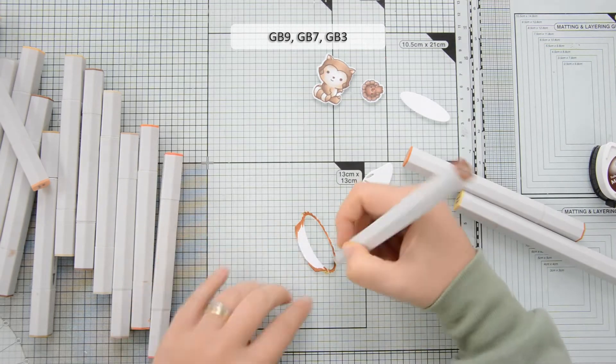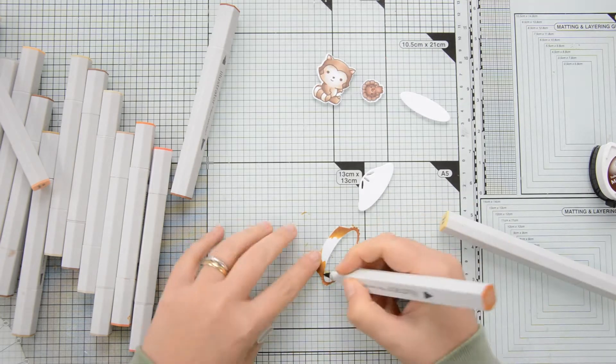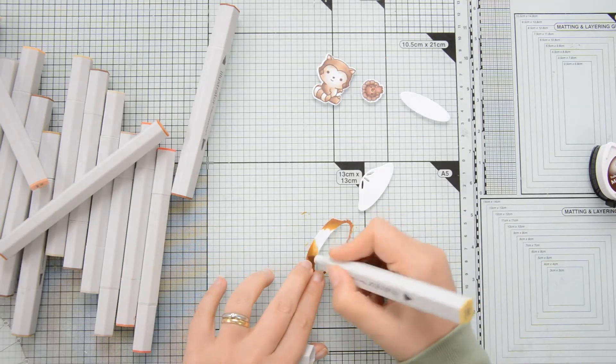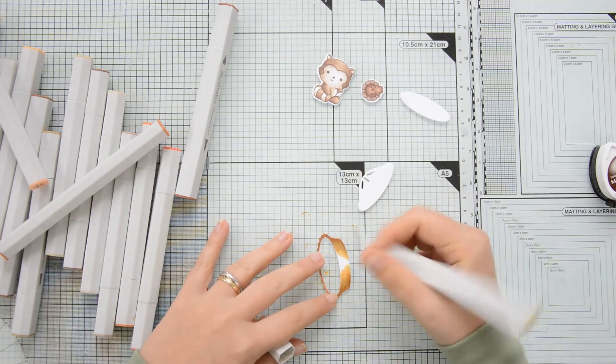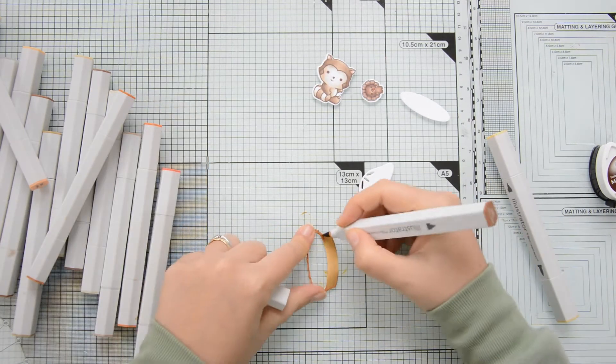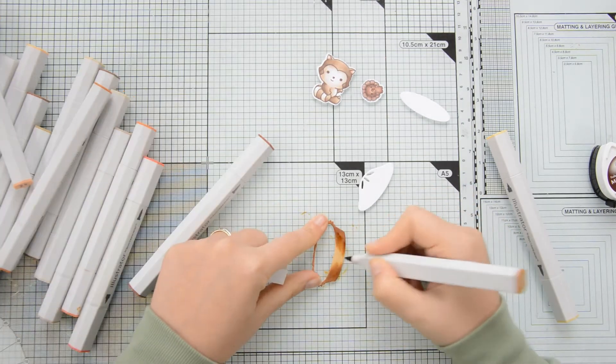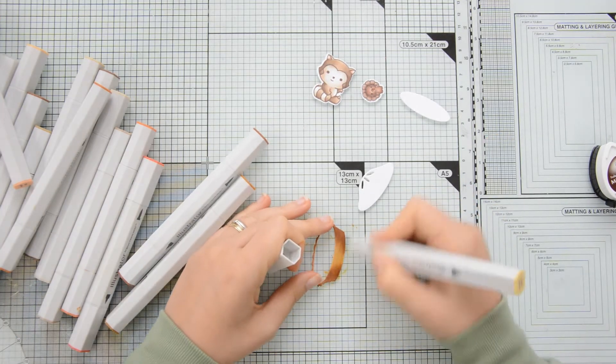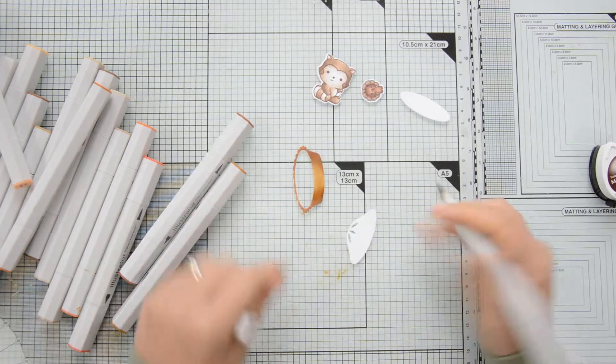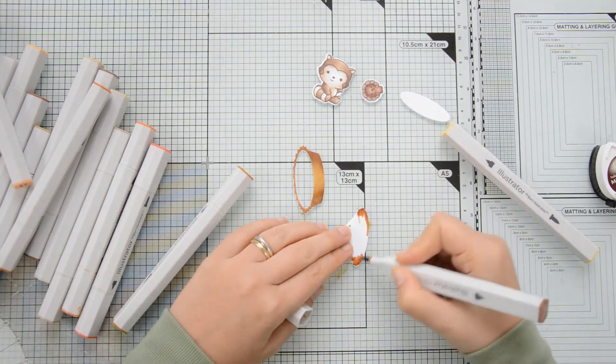I used GB9, GB7 and GB3. Actually here you see me going in with GB6 but I didn't like the color it was a little bit too yellow so I'm going to go over that with a GB7 marker. Again adding a second layer of color because I like to have a lot of contrast on my images or on my die cut images and then I'm moving on and coloring the rest of the pie.